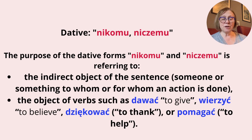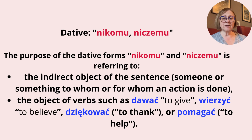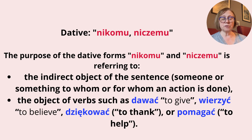Dative: Nikomu, Niczemu. The dative forms Nikomu and Niczemu are used to refer to: 1) the indirect object of the sentence — someone or something to whom or for whom an action is done; 2) the object of verbs such as dawać (to give), wierzyć (to believe), dziękować (to thank), or pomagać (to help).